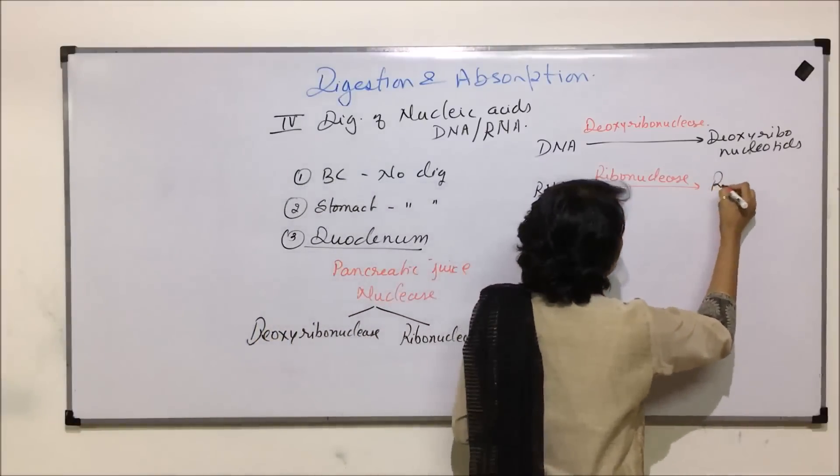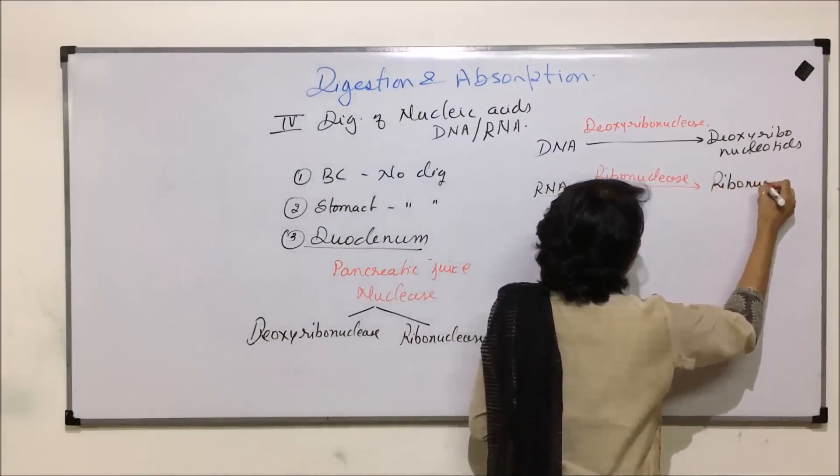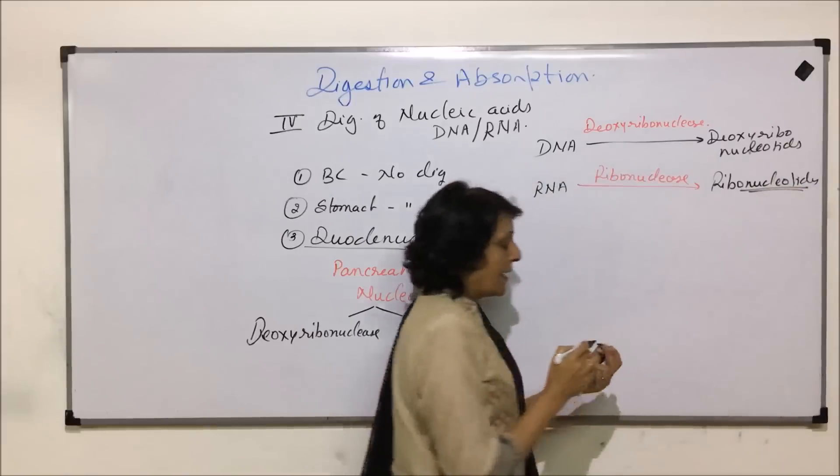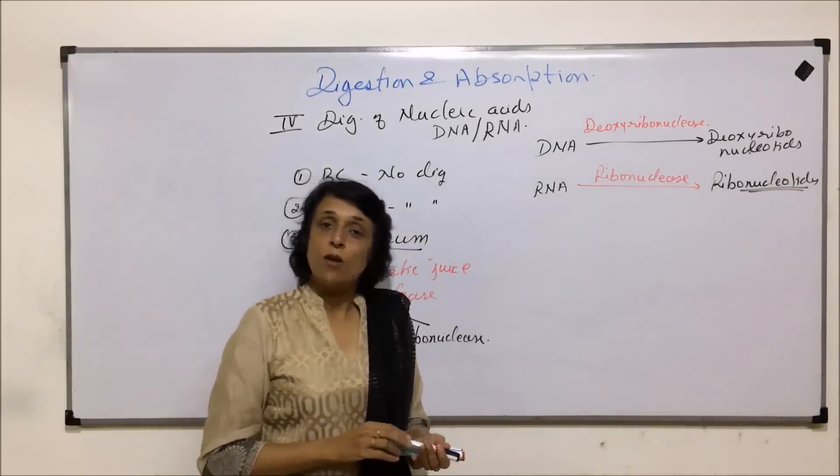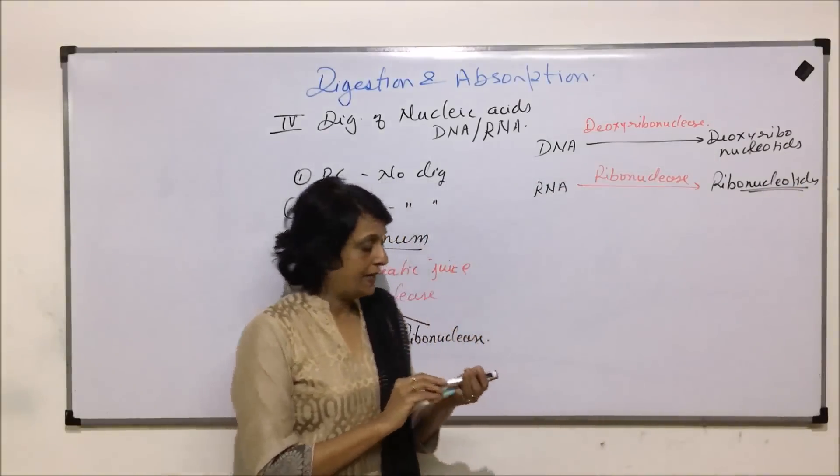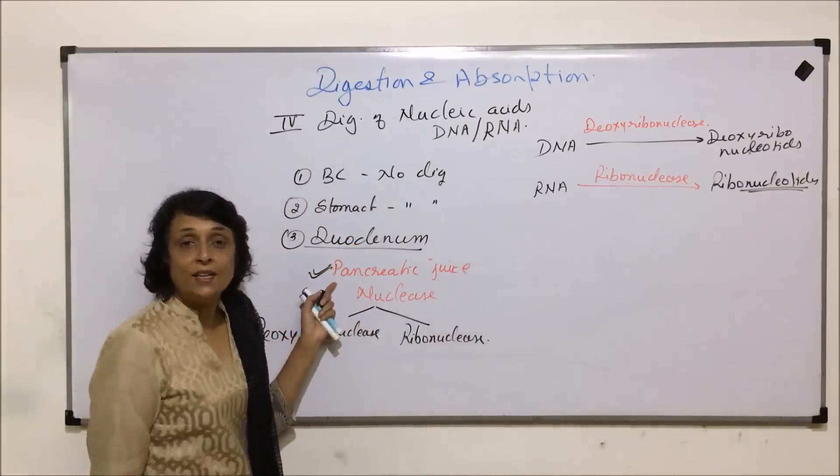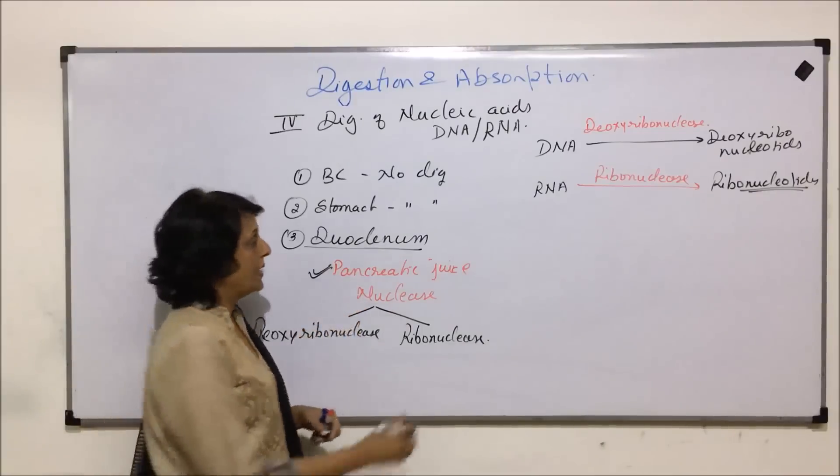And here it would be ribonucleotides. So we can write deoxyribonucleotide nucleotides or simply nucleotides in both the cases. This is through pancreatic juice which has nucleases.